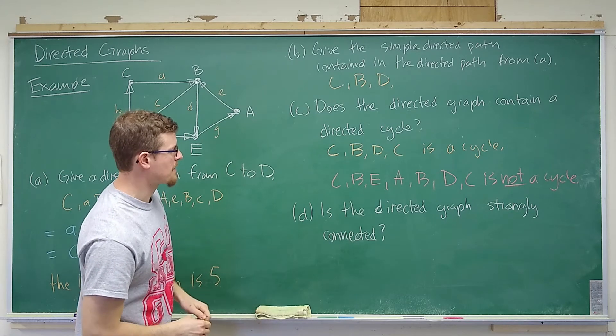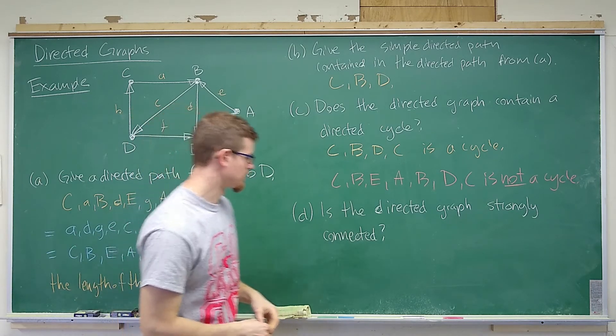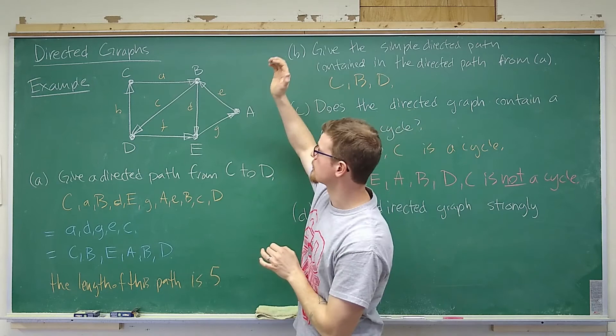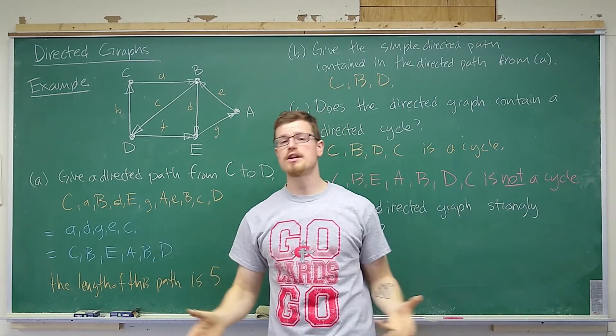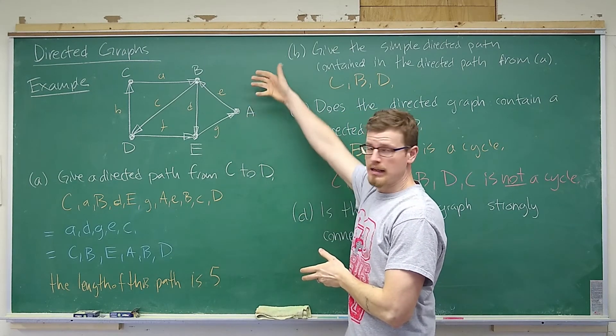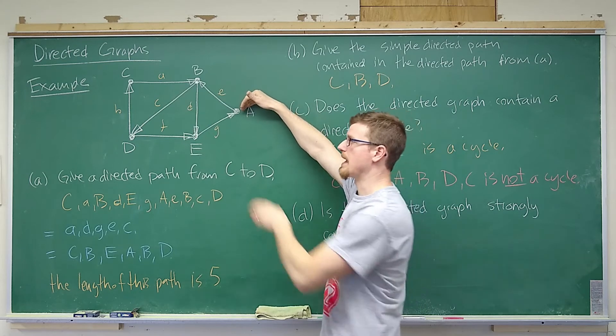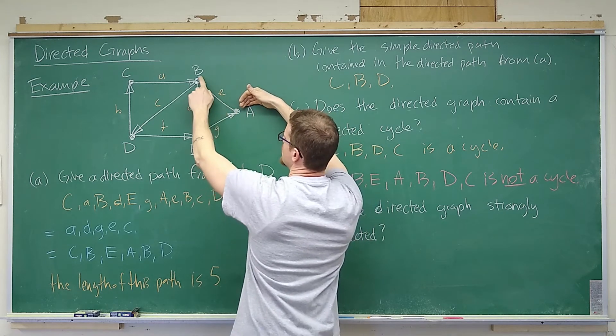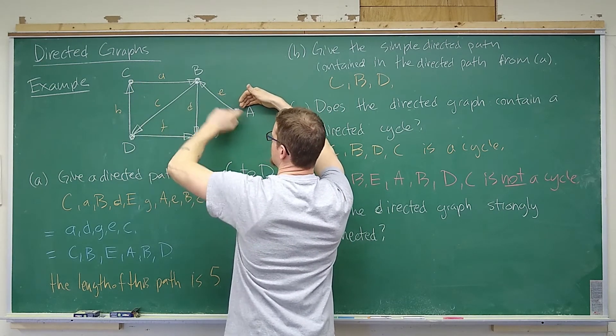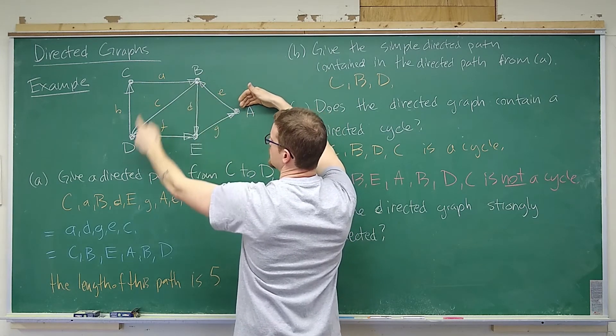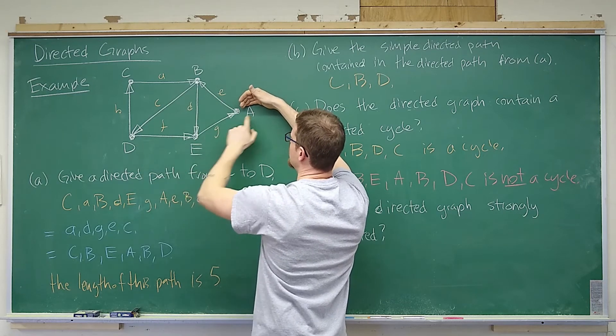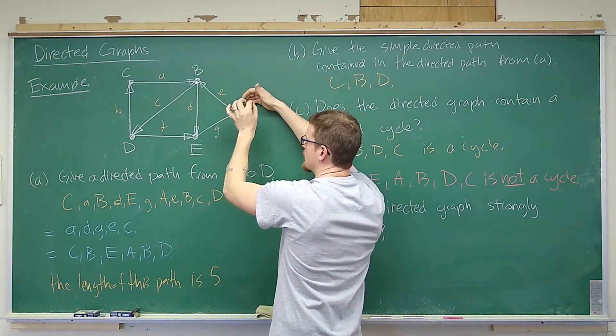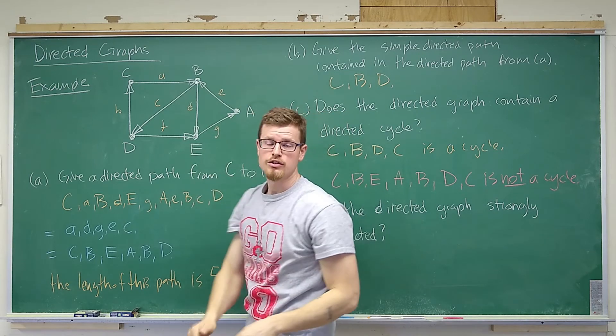Is the directed graph a strongly connected directed graph? For a graph to be strongly connected, we have to be able to travel from any vertex to any other vertex. So to go through the entire thing might be a little bit extensive here, but we'll look at a couple of vertices. So I need to know if I can travel from A to every other vertex. So I can go from A to B. I can go from A to B to D to C. I can go from A to B to D. And then I can go A to B to E to get to all of the vertices. So I can get from A to B, A to C, A to D, and A to E. So thumbs up there.